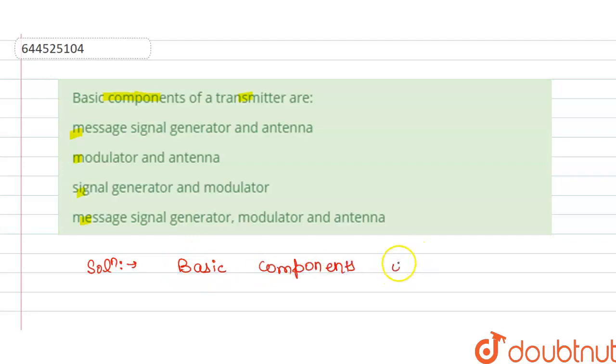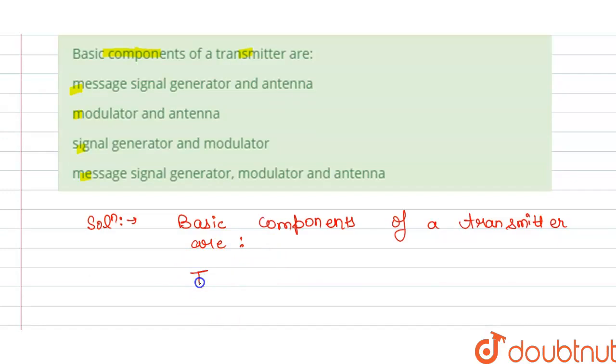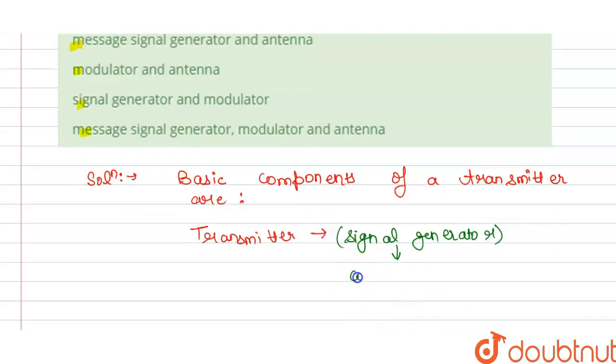The solution of this question is: We have to find the basic components of the transmitter. So we can write here basic component of the transmitter are as given below. Firstly, we have the transmitter, and for this we have required some signal generator initially that will generate the signal.